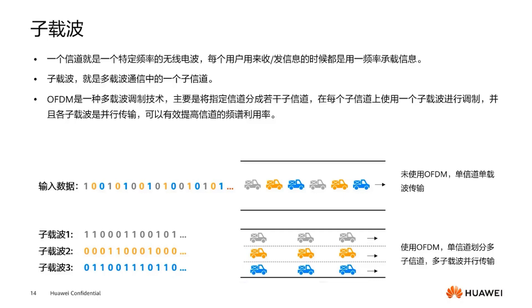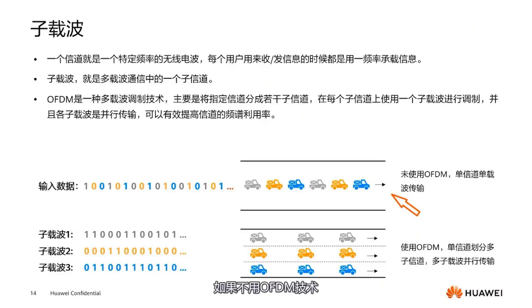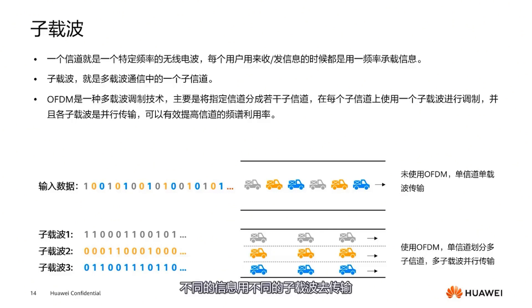Most Wi-Fi technologies use OFDM technology for propagation. Initially, data transmission worked like this — imagine different fleets: yellow is one fleet, gray is another, blue is another. Without OFDM, when transmitting simultaneously, different channel signals get mixed together. Using OFDM technology effectively divides different subcarriers so that different information is transmitted using different subcarriers, enhancing the channel's transmission efficiency.